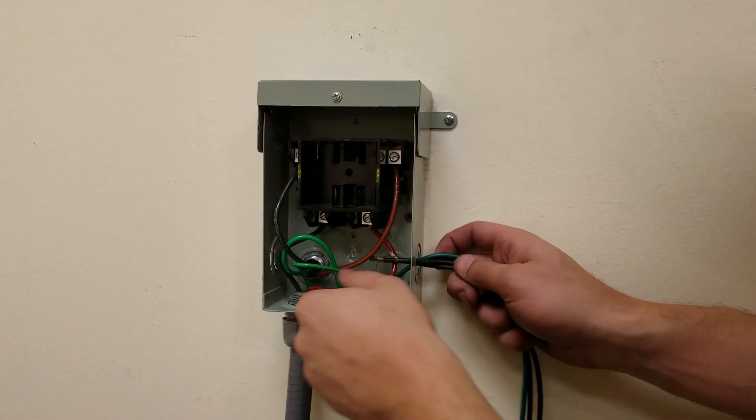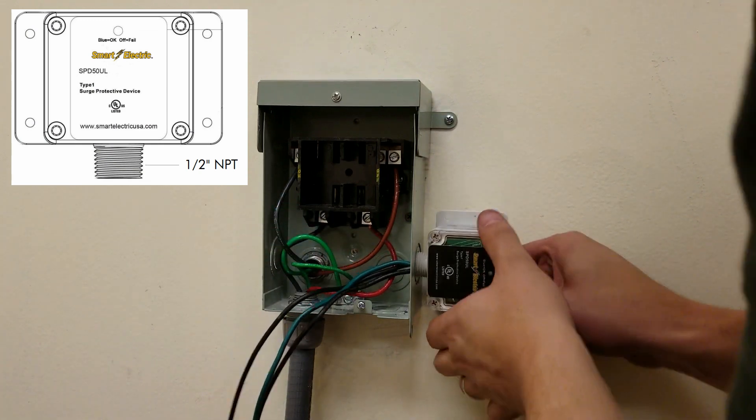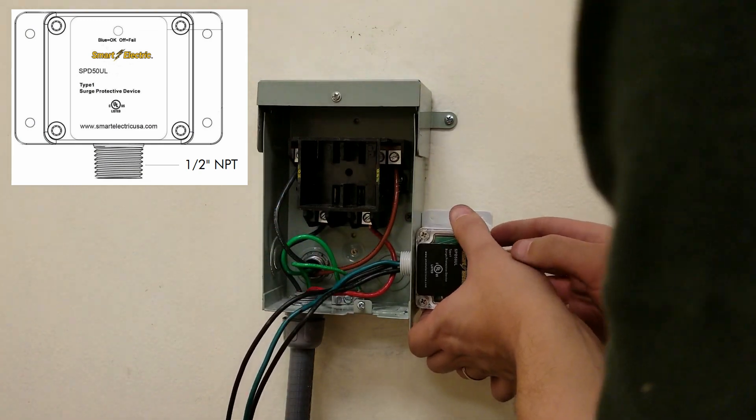The surge protecting device features an NPT threaded collar for mounting the unit directly onto the disconnect box via the standard knockout panels.